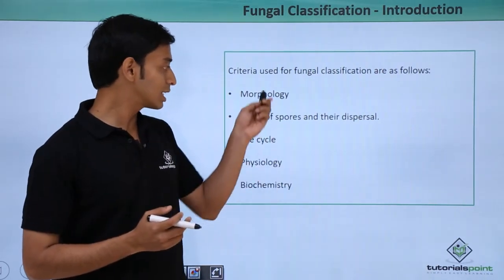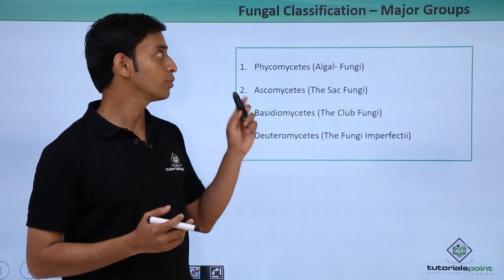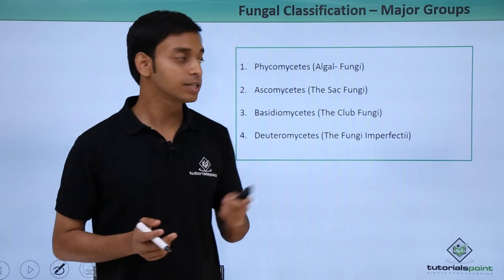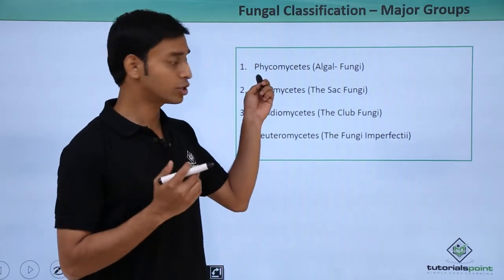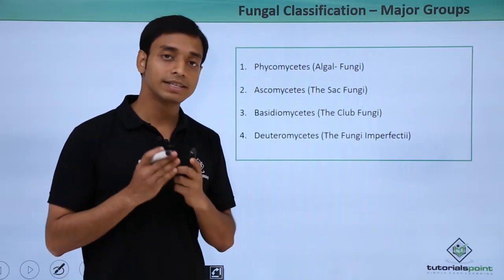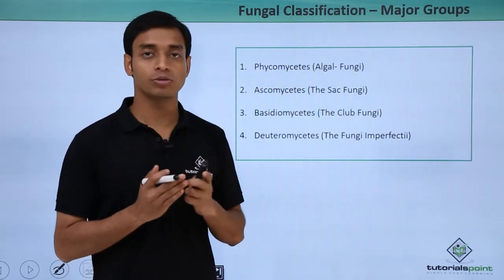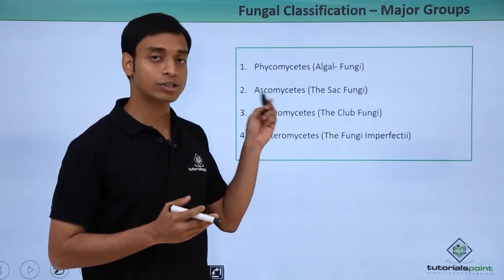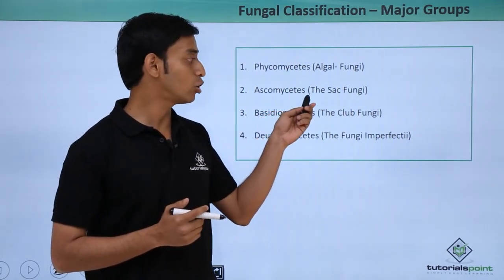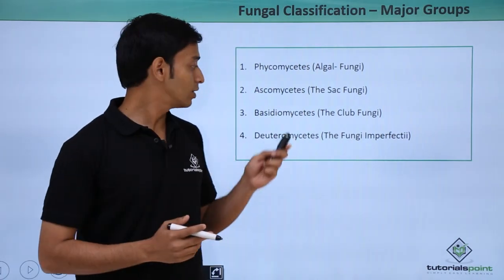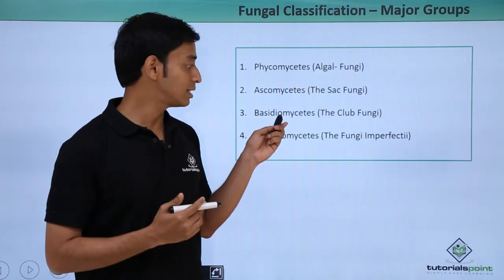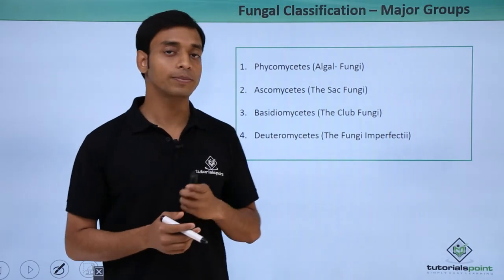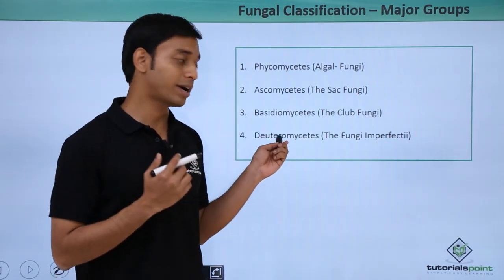Based on all these criteria, fungi have been divided into four major groups. First, Phycomycetes, also known as the algal fungi. Second, Ascomycetes, also known as the sac fungi. Third, Basidiomycetes, also called the club fungi. And fourth, Deuteromycetes, also known as the fungi imperfecti.